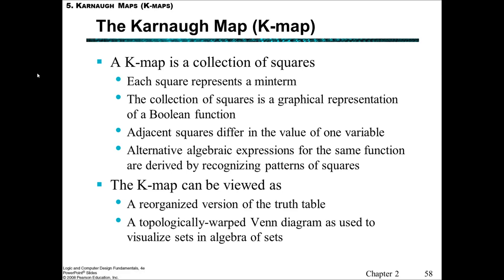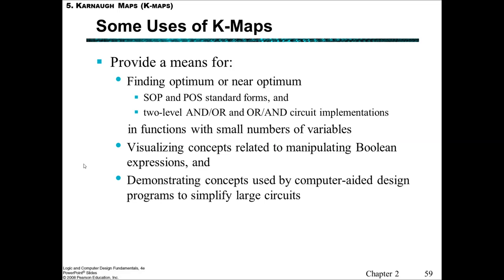Welcome to the fifth part of this lecture on the Karnaugh map, the K-map. The K-map is a collection of squares where each square represents a minterm, and this collection of squares is a graphical representation of the Boolean function. The way the K-map is drawn means that adjacent squares only differ in value of one variable, a little bit like when we had the grey code, and we need to recognise the patterns in the squares so that we can come up with alternative algebraic expressions. The K-map is actually a reorganised version of the truth table, and it's what's called a topological warped Venn diagram.